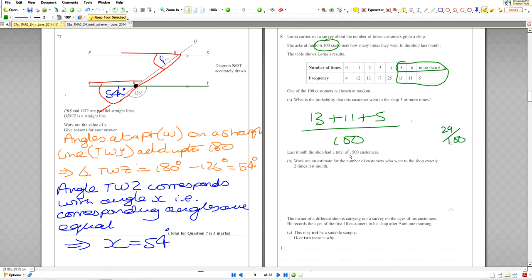Last month, the shop had a total of 1500 customers. Work out an estimate for the number of customers who went to the shop exactly two times last month. Estimate is not short for guesstimate.